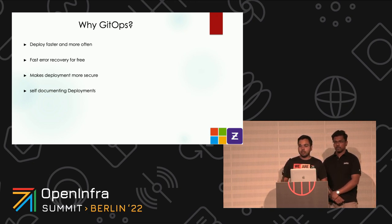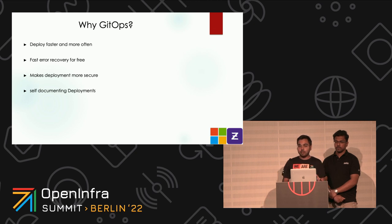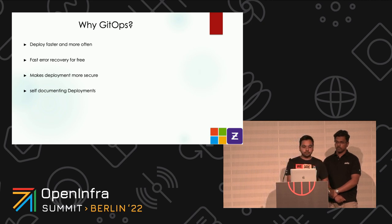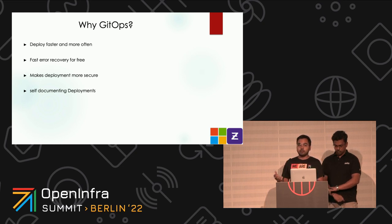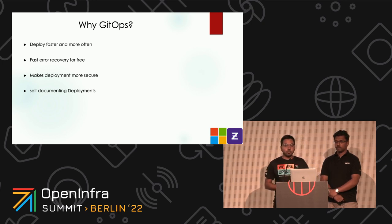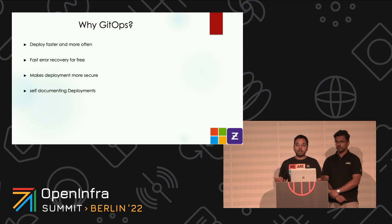GitOps also makes deployments secure. GitOps allows you to manage deployments completely from inside your environment. Your environment only needs access to your repository and image registry. You don't have to give your developers direct access to the environment, because the kubectl is the new SSH. And then you have self-documenting deployments. Have you ever logged into an environment and wondered what's deployed here? With Git repositories, everything is declared there — you just check the Git repository and everything is laid out.